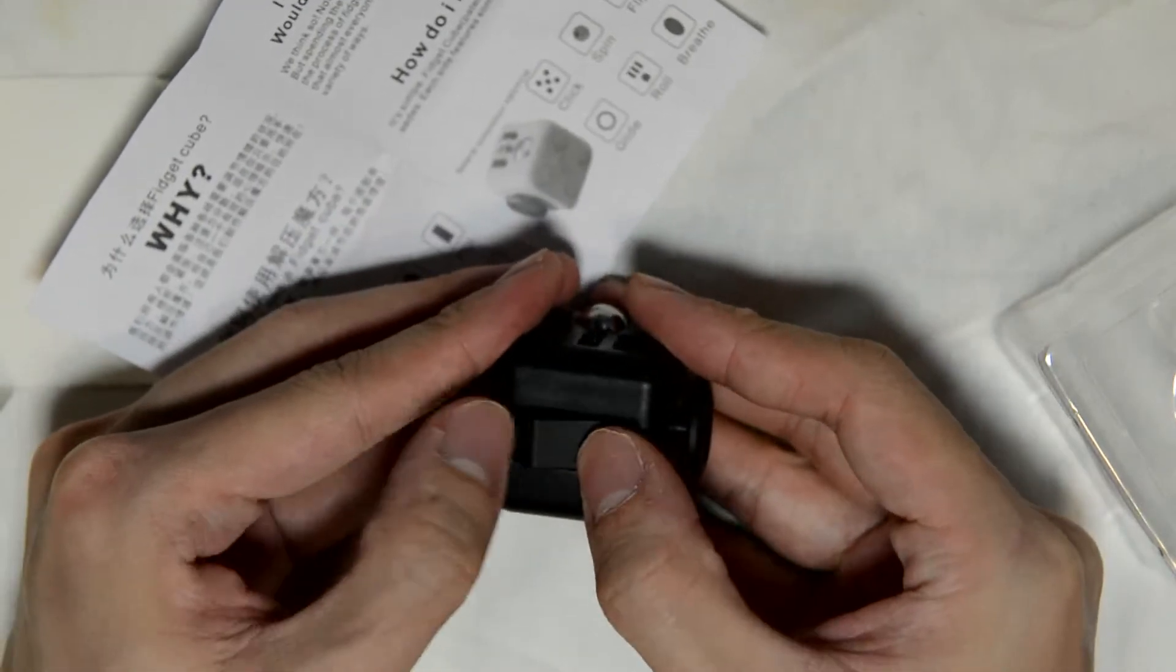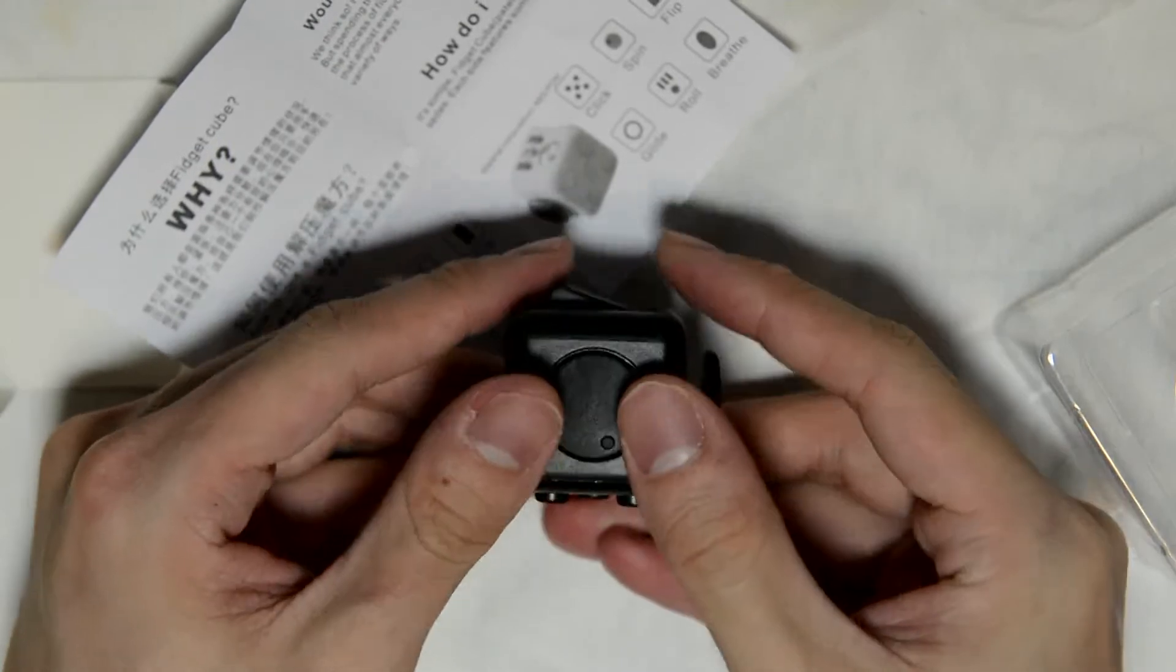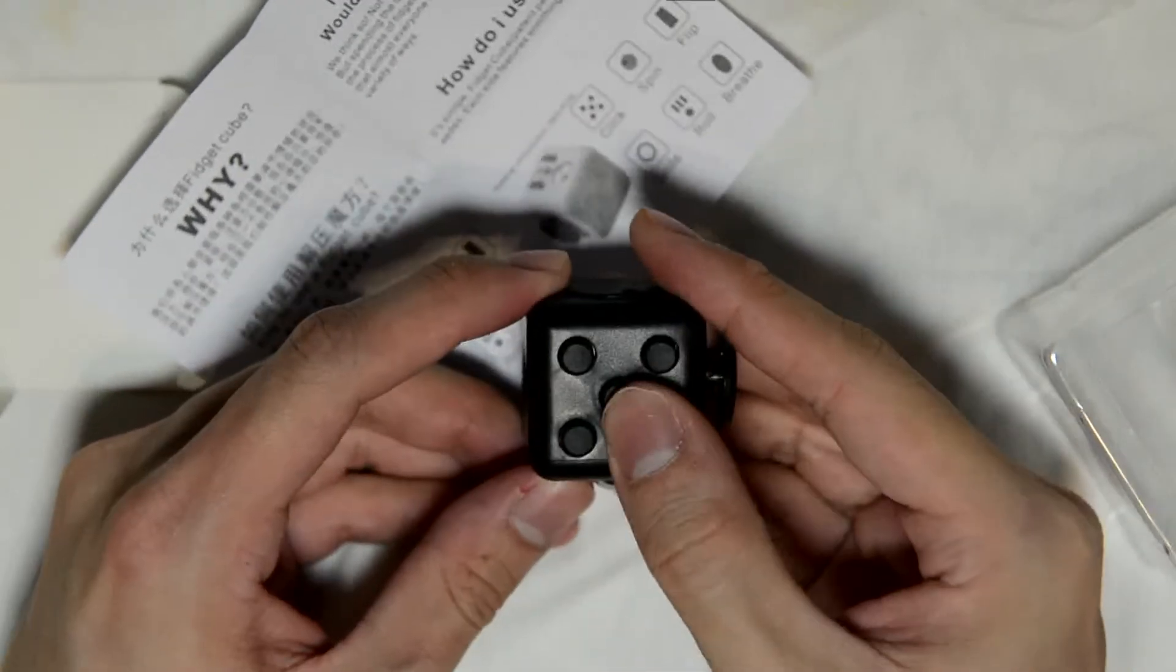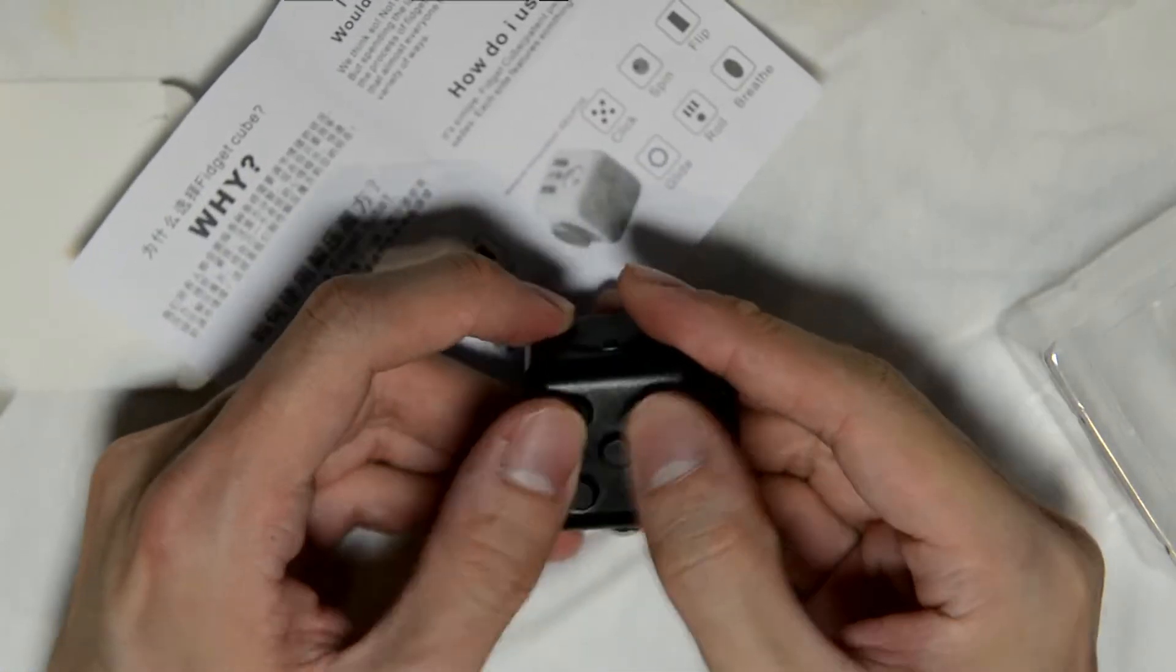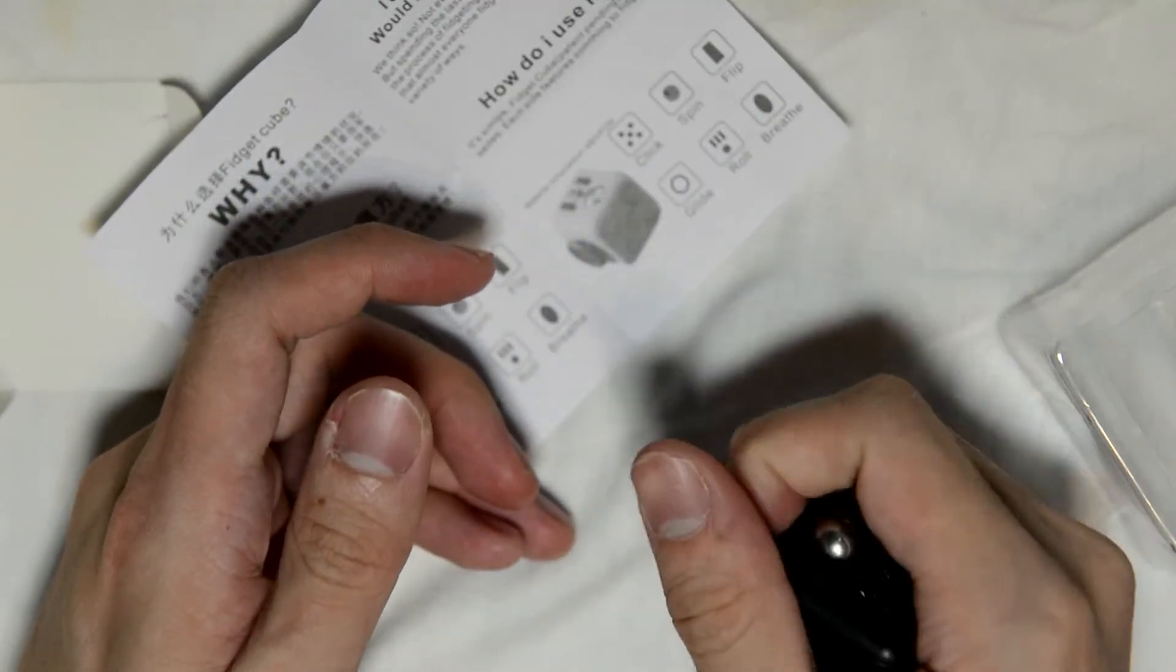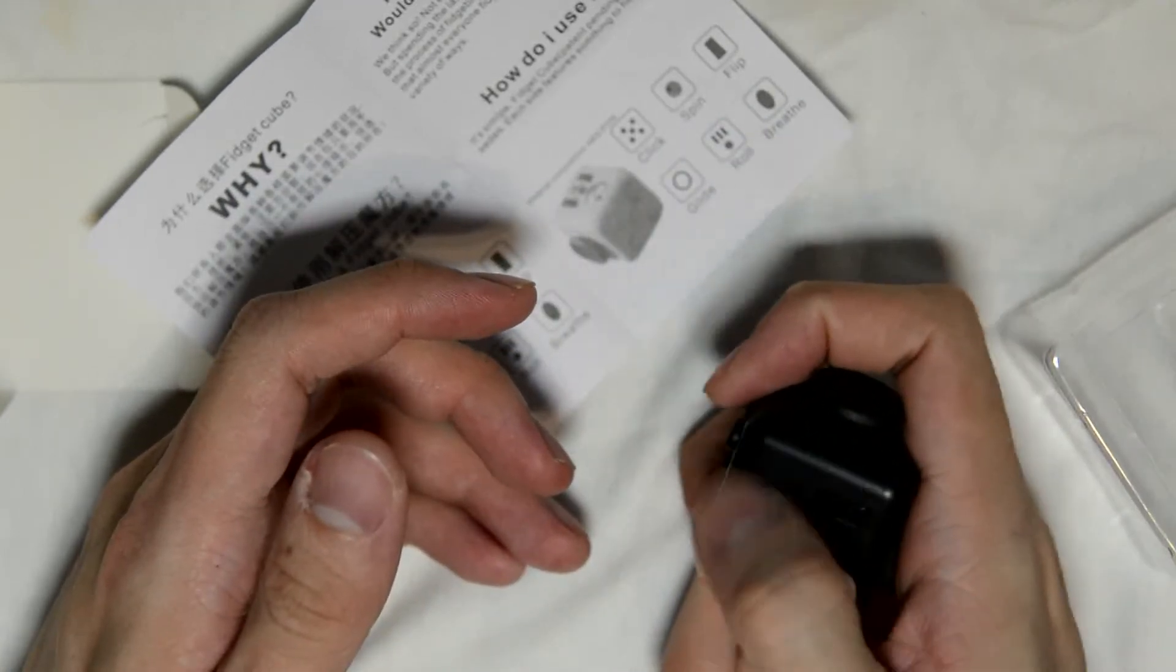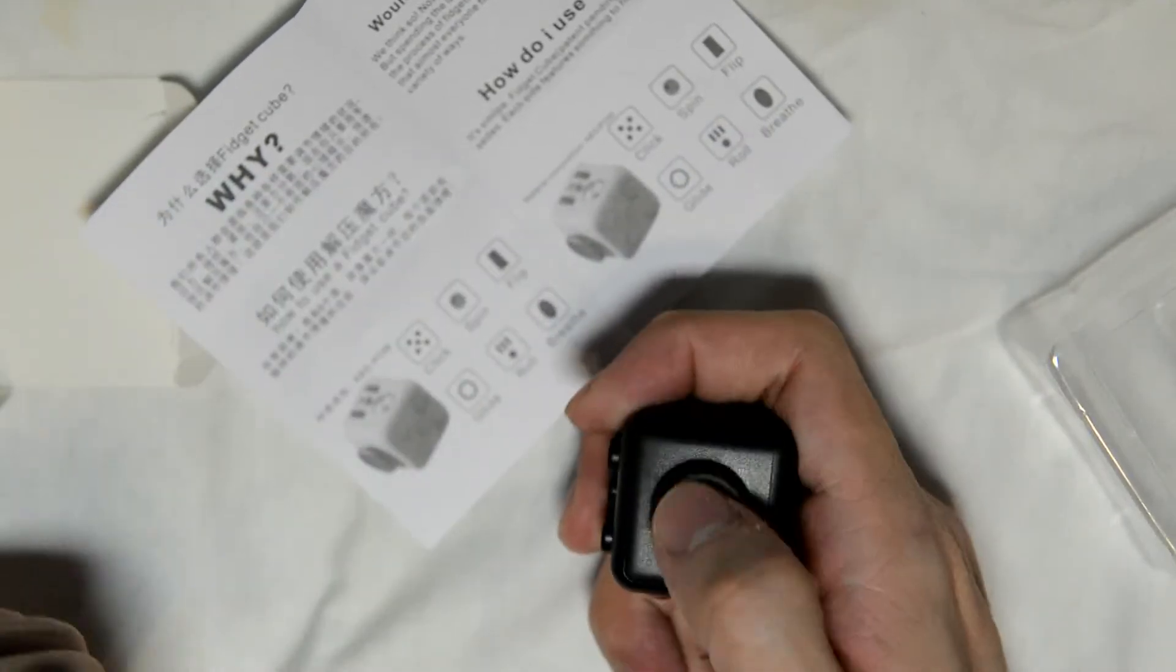And this is the switch, button switch. Yep. What else we have, the clicking ones, clicking buttons. So the whole idea is that you hold one of this and you can be in class and start clicking, or you can start rolling the ball, you can start playing the analog stick, and so forth.